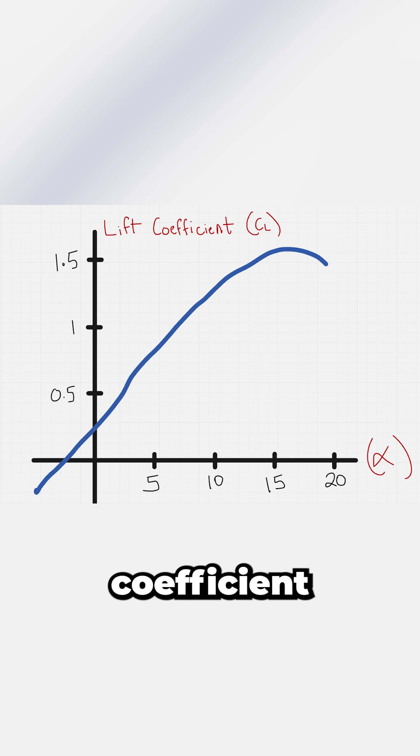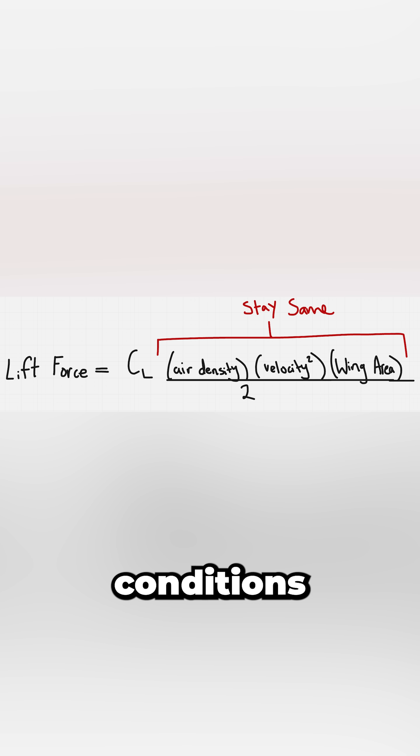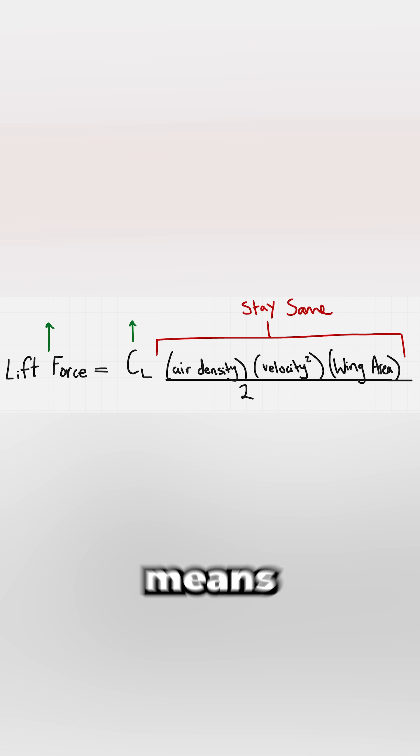The vertical axis is the lift coefficient, or CL. Assuming all other flight conditions stay the same, a higher lift coefficient means more lift.